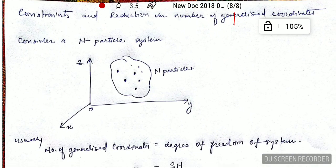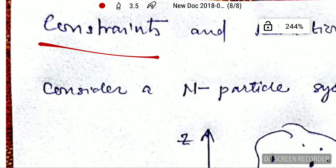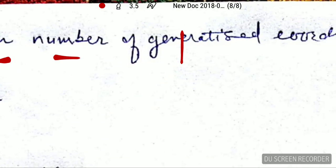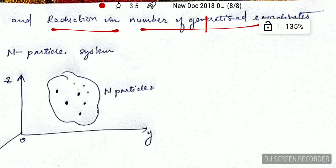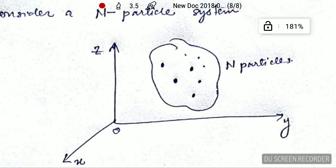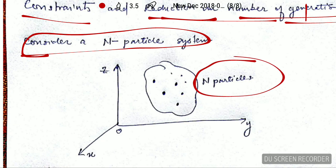Hello friends, welcome back to my channel. Today in this video lecture we will learn about constraints and how the reduction in the number of generalized coordinates happened due to constraints. For this, consider an n-particle system. The n-particle system has n particles.